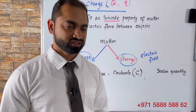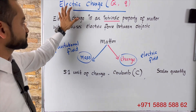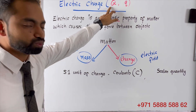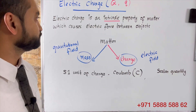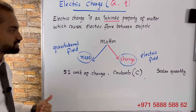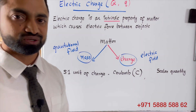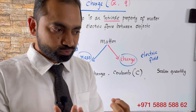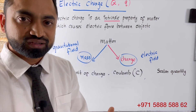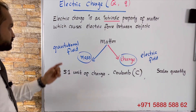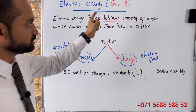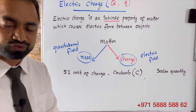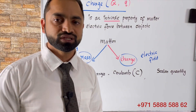What is electric charge? Electric charge, represented by the letter Q, is an intrinsic property of matter. Intrinsic property means the inherent property of matter. Electric charge is an intrinsic property of matter which causes electric force between objects.